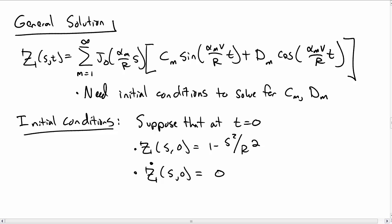And it has zero velocity initially, so z dot of s for all s at t equal to 0 is 0. And so what this looks like, the initial condition is, it goes out to r and so you have a drum that's kind of shaped roughly like that.